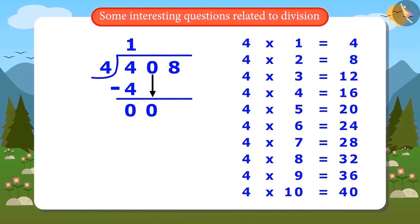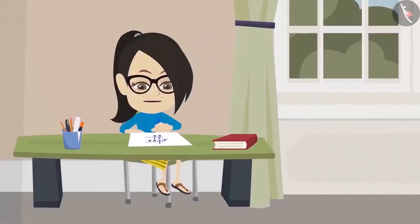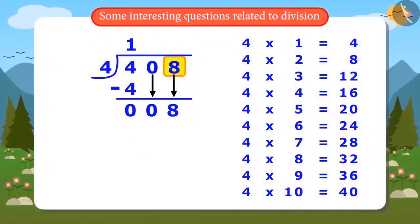Hey, this one is also 0. What do I do now? Let me also write down the next number. Write down 8. So, now the number becomes 8.